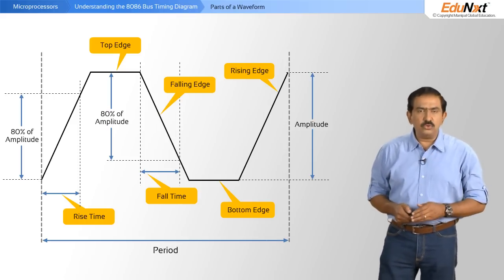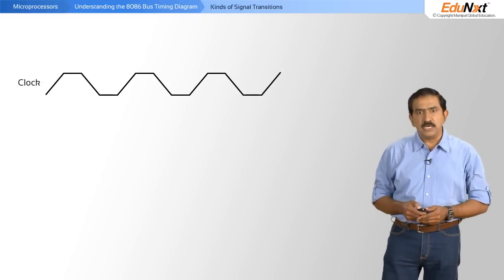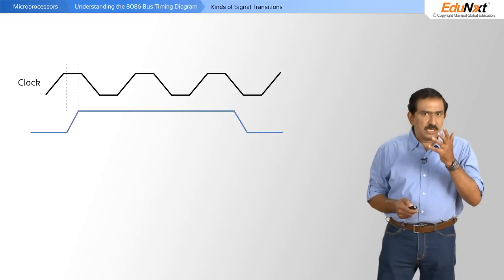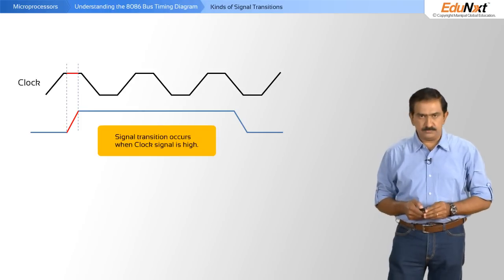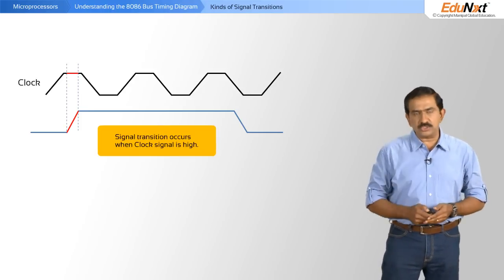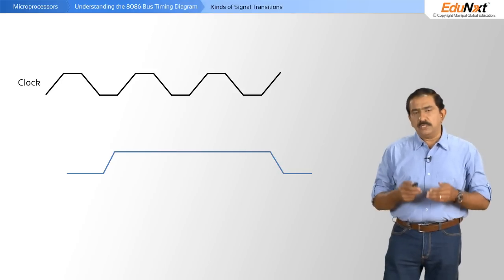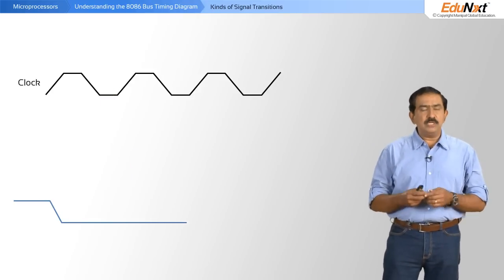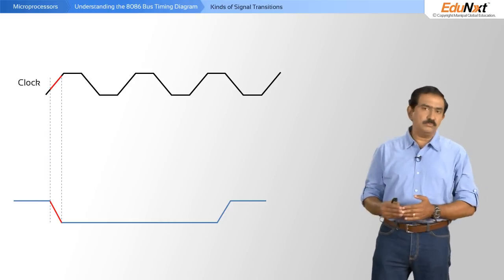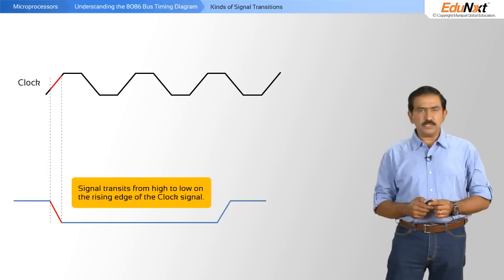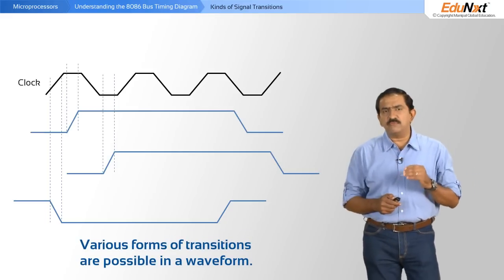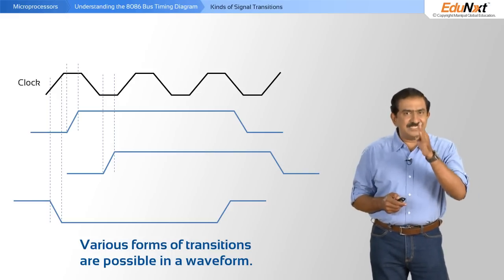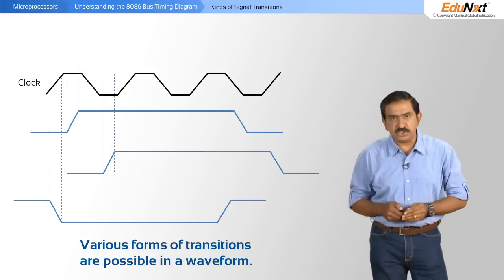So let us look at how to read a generic waveform. This is an example of a clock signal. A clock signal in this case shows a transition of low to high when the clock signal is at high. In another example, a signal is transitioning from low to high when the clock signal is low. A third example is a transition from high to low on the rising edge of the clock signal. It is important for you as a hardware designer to design it such that it meets the requirements as mentioned by the manufacturer.